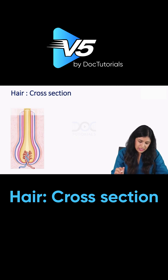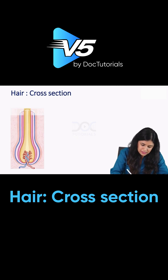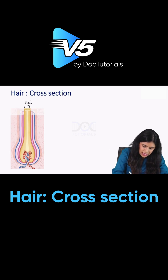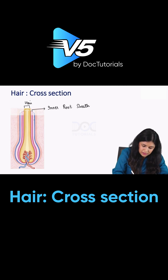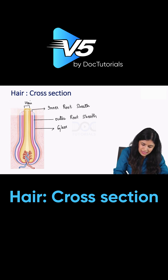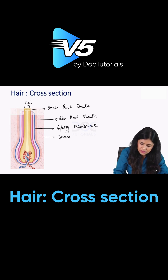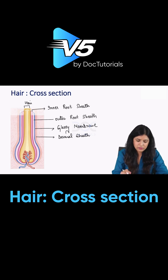Now coming to the cross section of the hair. When you see the cross section, here is the hair. Outer to the hair is the inner root sheet, and then we have the outer root sheet, which is enveloped by the glassy membrane — also called the hyaline membrane — and surrounded by the dermal or connective tissue sheath. This is how you see the hair when you look at the cross section.